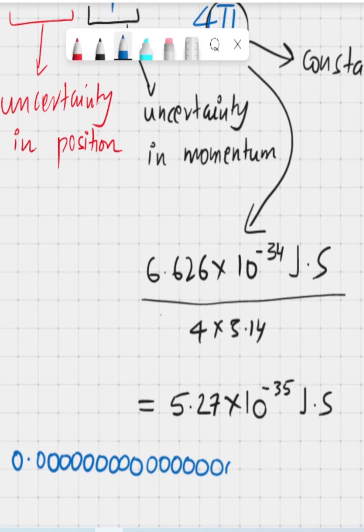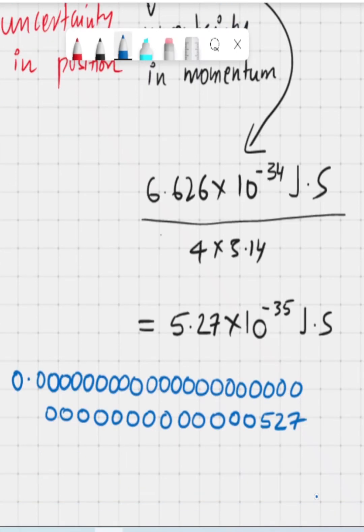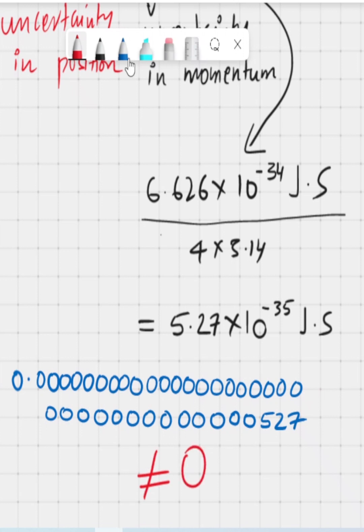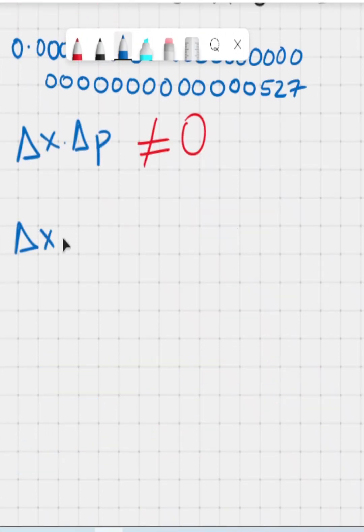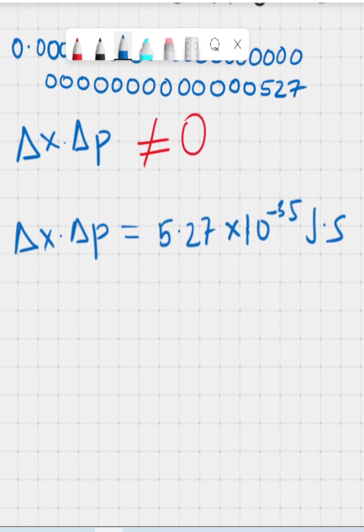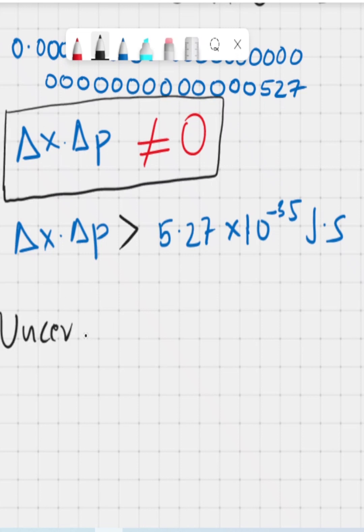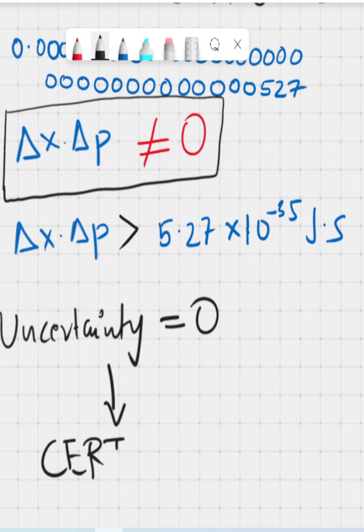And this is a really, really small number, but it is not zero. And that is what is important. Basically, this equation is telling us that the product of uncertainties will at least be equal to this number, or can be greater than this number, but it won't be zero. Because if the uncertainty was zero, then it would be certain. So no matter what, there will always be some kind of uncertainty with regards to electrons' position and momentum.